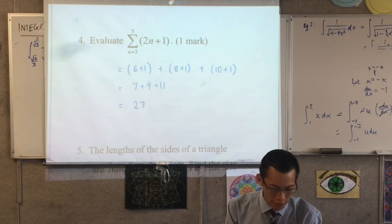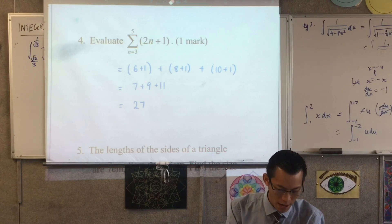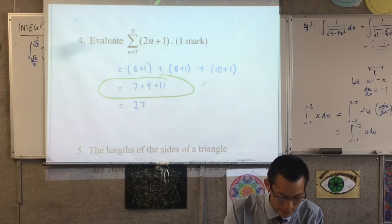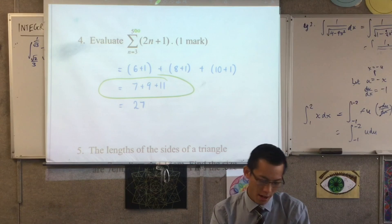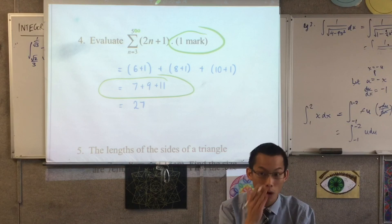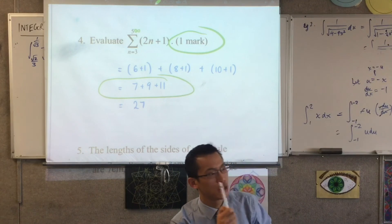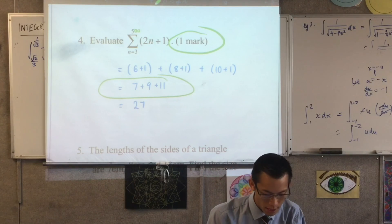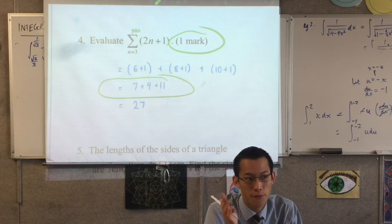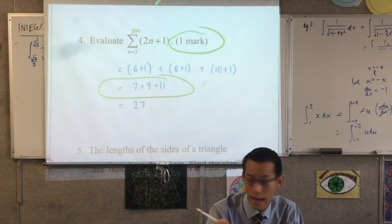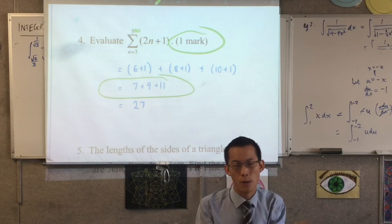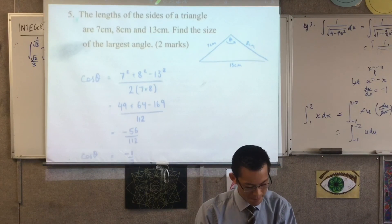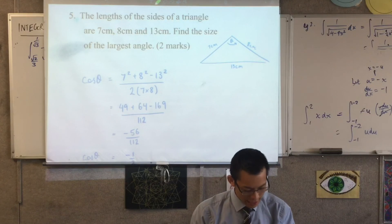This was the sigma notation question. Writing it out like this makes it clear it's an AP. If the question goes from 3 to 500, that's a different question entirely — worth more than one mark, testing whether you recognize it as an AP and know the right formula. Though you could also use the first and last term, take the average, and multiply by however many pairs there are. Either approach works.